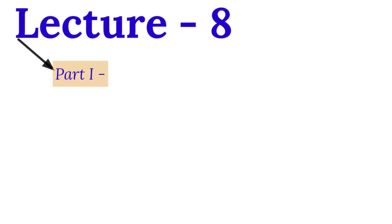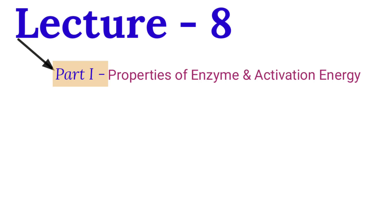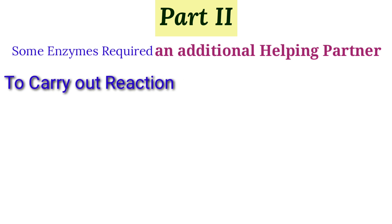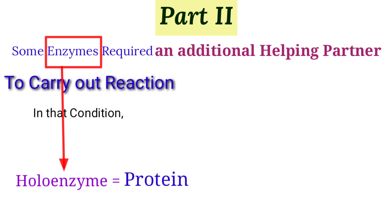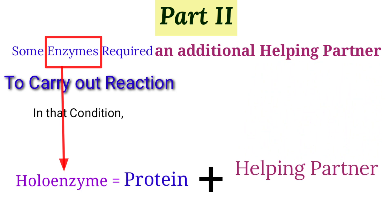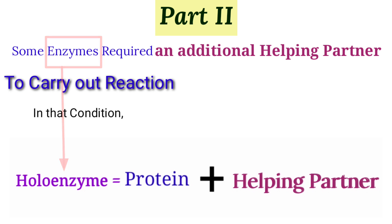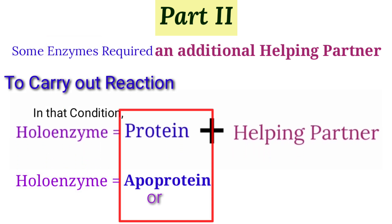Continuing lecture 8 in part two, it has been seen that some enzymes require an additional helping partner in association with them to carry out the complete process. When this condition occurs, the enzyme is known as a holoenzyme, which contains a protein section and a helping partner associated with it. The protein section is known as apoprotein or apoenzyme.